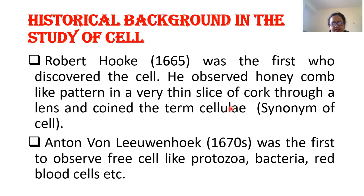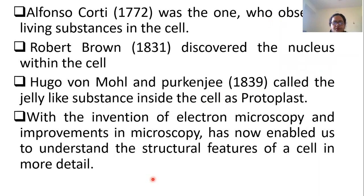He named it as a cell. The second scientist is Antony von Leeuwenhoek. He was the first to observe free cells of protozoa, bacteria, and red blood cells, with the help of a microscope. Another scientist, Alfonso Corti, was the first who observed the living substances inside the cell — he observed that inside the cell there is a ground matrix which is living.